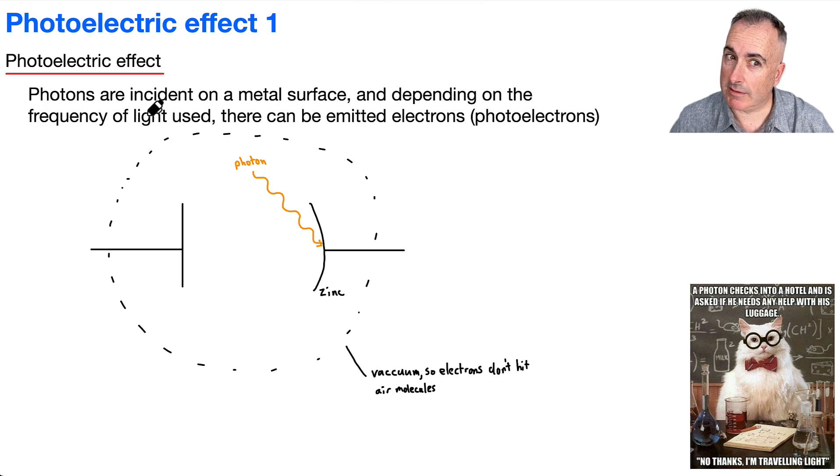And depending on the frequency of light used, which we'll learn about in a second, there can be emitted electrons. So what do I mean by that? These little electrons can actually go flying out. So they can go wee and then go this way, for example. So this here can be some electrons. Now, they're called photoelectrons. That's the name we give to electrons that are flying out because of this photoelectric effect.